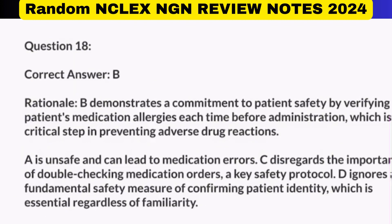Correct answer: B. Rationale: B demonstrates a commitment to patient safety by verifying the patient's medication allergies each time before administration, which is a critical step in preventing adverse drug reactions. A is unsafe and can lead to medication errors. C disregards the importance of double-checking medication orders — a key safety protocol. D ignores a fundamental safety measure of confirming patient identity, which is essential regardless of familiarity.